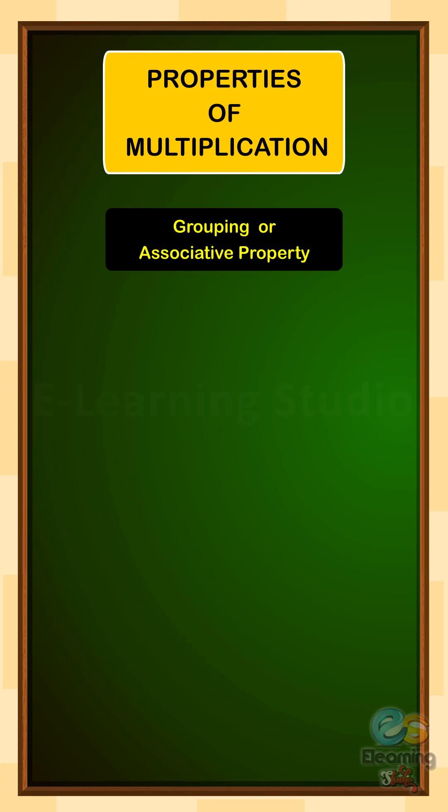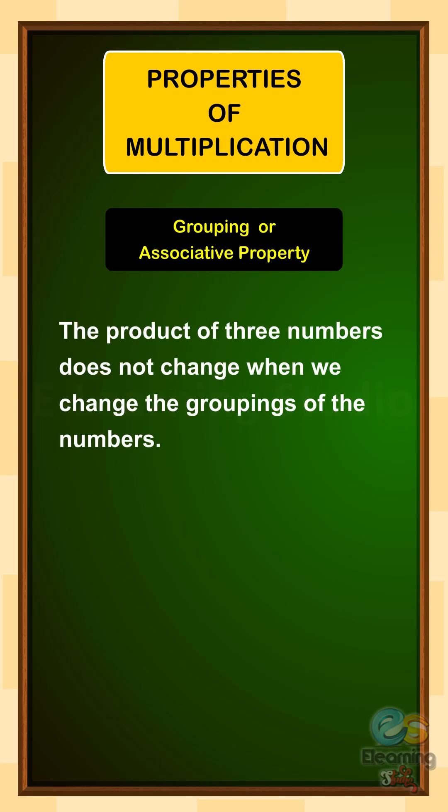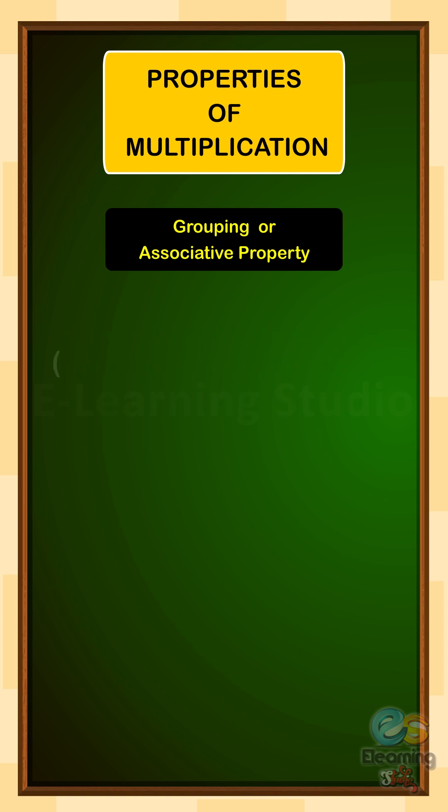Next is the grouping or associative property. The product of three numbers does not change when we change the groupings of the numbers.